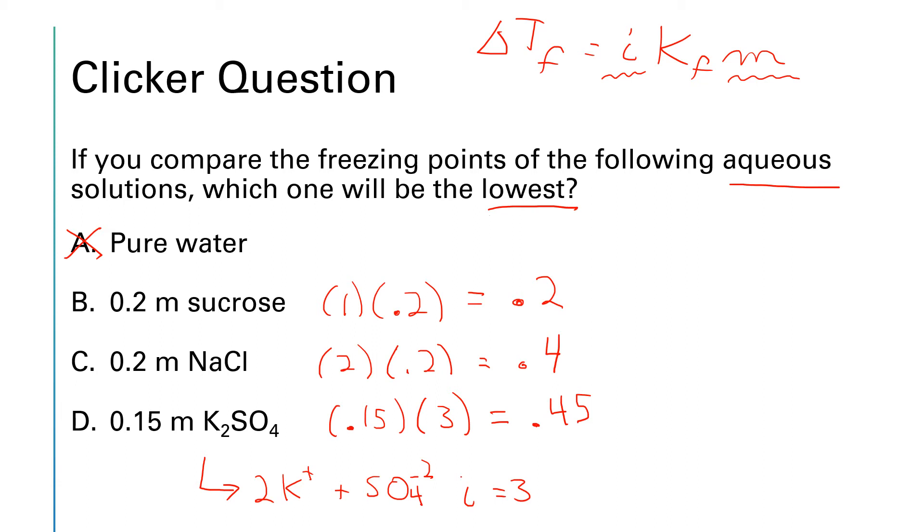And I've just realized I flipped i and m in this part D example. So i is the three and m is the 0.15, whereas I had it in the opposite order in the previous ones. So what we're looking for here is the i times m that's the biggest to give us the most freezing point depression. So 0.45 is our biggest one. And so the solution with the lowest freezing point will be the 0.15 molal potassium sulfate.